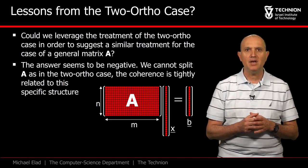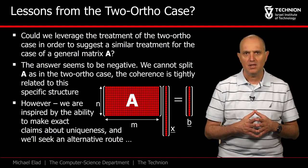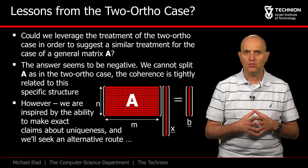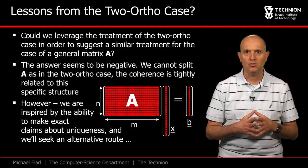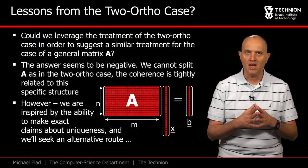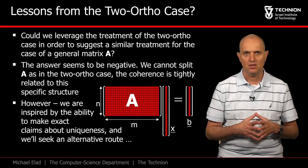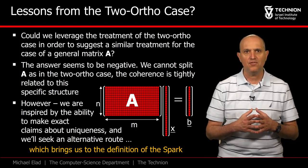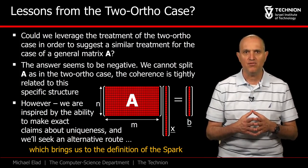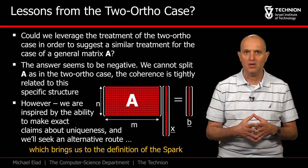Clearly we will need to find a new route. Still, we are inspired by the two-ortho results and hope to get to something similar, even if A is no longer as structured. This brings us to the definition of the spark that will be found extremely useful for developing this new route.